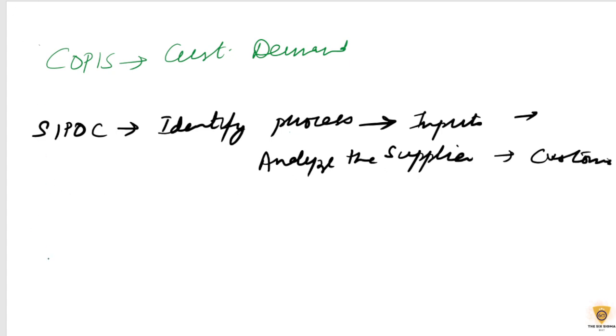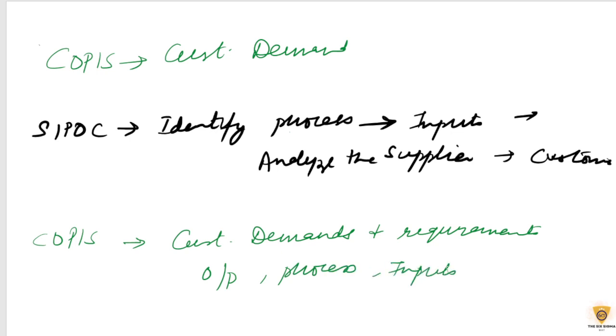Whereas in COPIS, it's all reversed. We first understand customer demands and requirements, then move to associated outputs to satisfy customer needs, then the process, then inputs, and finally suppliers.